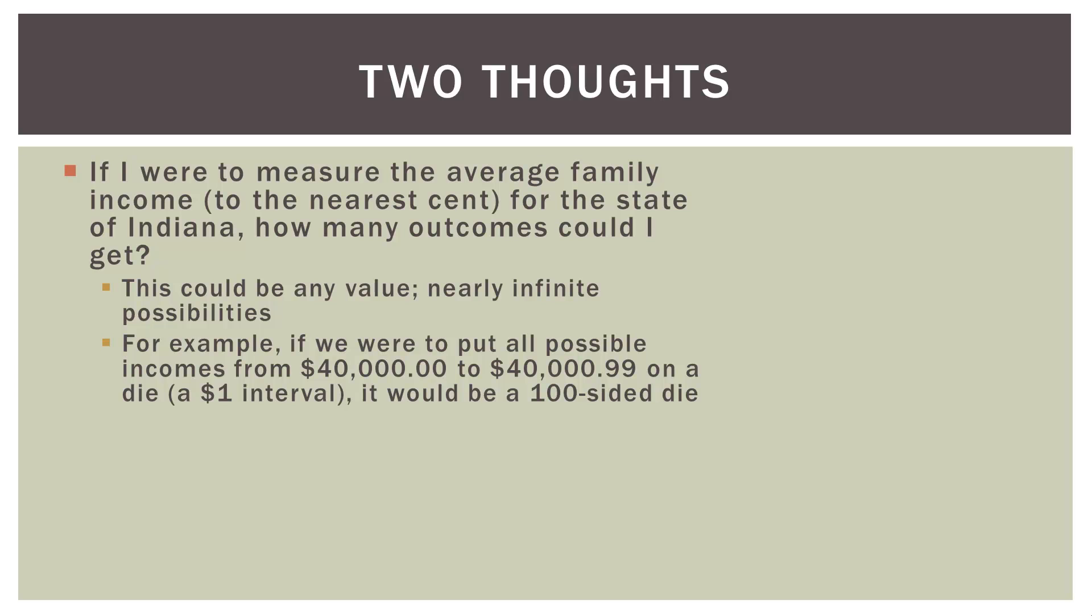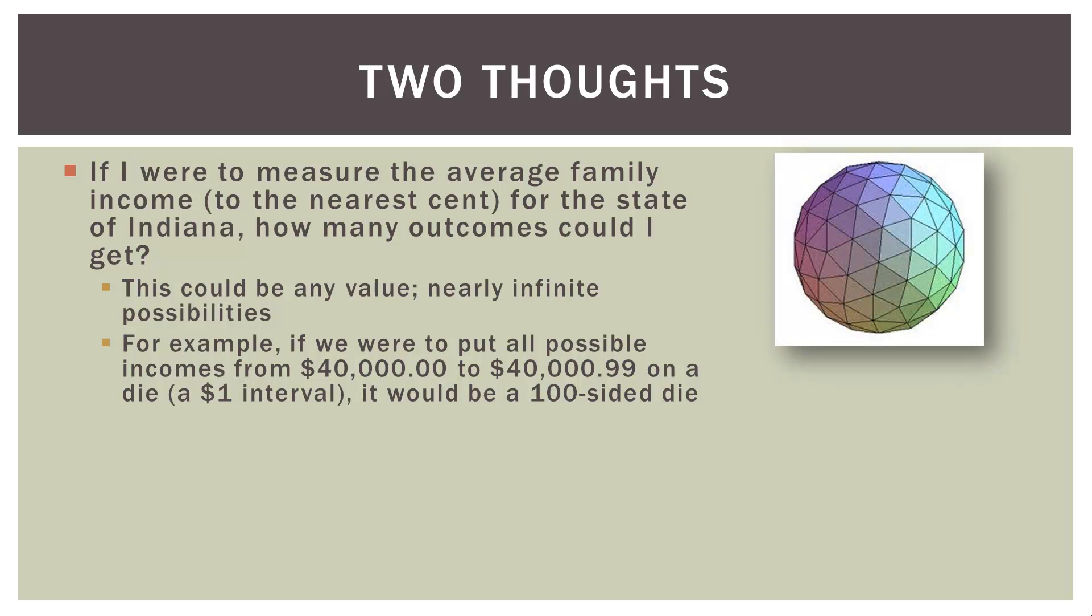So for example, if we were to put all possible incomes ranging from $40,000 even up to $40,000 and 99 cents on a die, okay, that's just a $1 interval there. We would have to make the die 100 sided. We'd have a space on it for $40,000 even. We'd have a space on it for $40,000 and one cent, a space on it for $40,000 and two cents, all the way up to $40,000 and 99 cents. Okay, we would have to have a 100 sided die to be able to do that experiment.